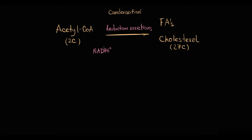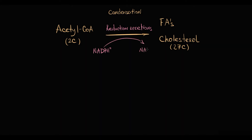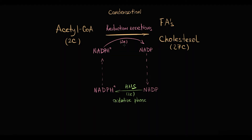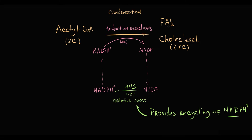In these reactions, NADPH donates two electrons and becomes NADP+. Then NADP+ returns to the Hexose Monophosphate Shunt, where in the oxidative phase it is converted back to NADPH, and NADPH can donate another two electrons. The Hexose Monophosphate Shunt provides this recycling of NADPH electron carriers, which makes it possible to maintain massive cholesterol and fatty acid synthesis in tissues such as the liver.